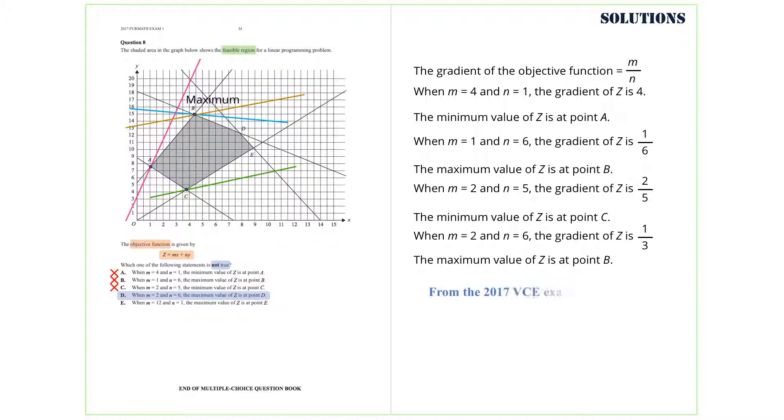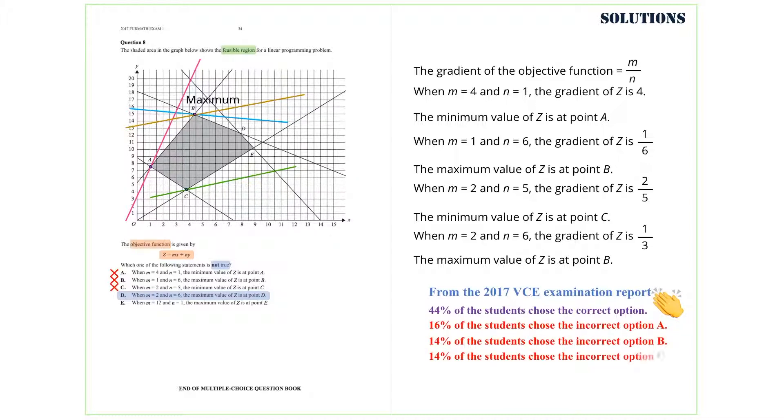From the 2017 VCE examination report 44% of the students chose the correct option. With 56% of the students choosing one of the incorrect options. And this is the end of the solutions to the VCE 2017 Further Mathematics Exam 1.